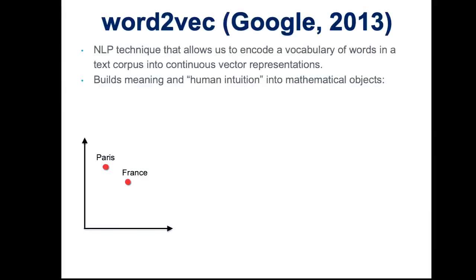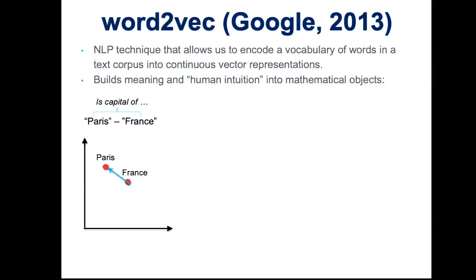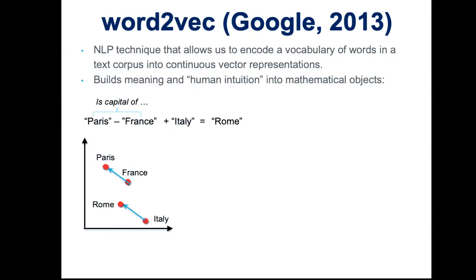Let's say you have positions for Paris and France. A very logical relation is 'the capital of.' In Word2Vec, you can take this distance vector — which means 'is the capital of' — and if you add it to Italy, you hope to get Rome. And this actually works. The way it works is because if you make a machine read an enormous amount of text, it learns the environment in which words occur when they are in short distance to each other.